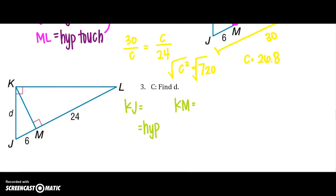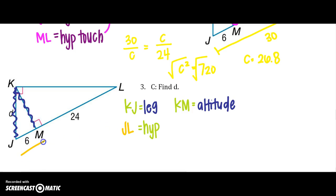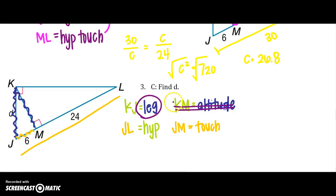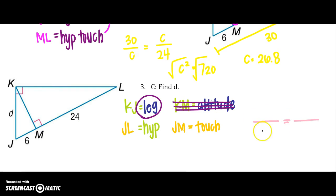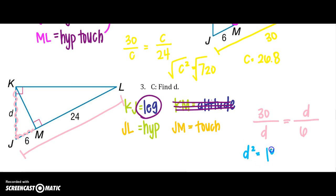To find the other leg KJ: KJ is a leg, the hypotenuse is JL which is 30, and the part of the hypotenuse touching KJ is JM, which is 6. Setting up: 30 over D equals D over 6. Cross multiplying gives D squared equals 180, so the other leg is approximately 13.4.